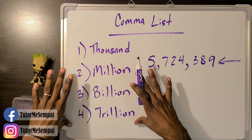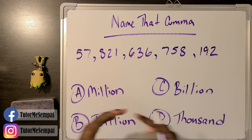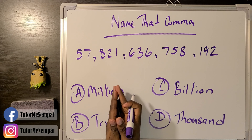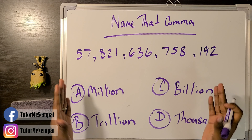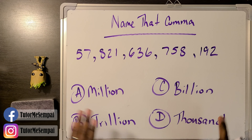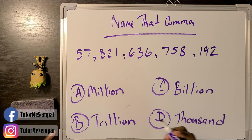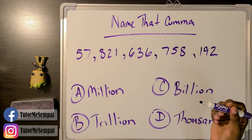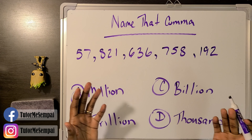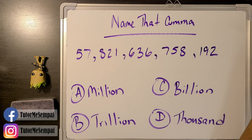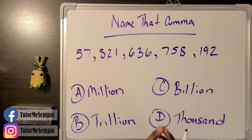Make sure you look at it because it's going to be gone in just a second. Now we're going to play Name That Comma, and I've given you a really big number with the first four commas listed out. The names are not in the correct order. What you have to do is figure out — is it A, B, C, or D that I'm pointing to? I'll be pointing to a comma and you tell me what letter has the correct name. Remember, when naming your commas, you start from the right.